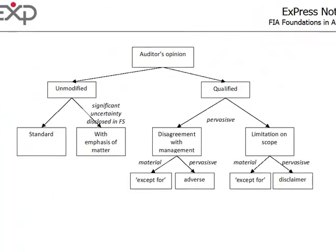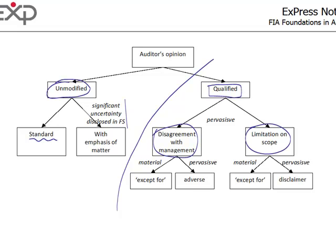To summarize it all, there is a graph on the last page. The opinion can be clean or qualified. When it's clean, it can be just a standard opinion saying true and fair view, end of story — or, if there is some significant uncertainty, there will be an emphasis of matter paragraph, but it's still clean and still good. The bad ones are modified opinions, which may be due to disagreement with management or limitation on scope. If the disagreement is material it results in an 'except for' opinion; if pervasive, it's an adverse opinion. Likewise, if the limitation on scope is material it's an 'except for'; if pervasive, it results in a disclaimer of opinion.